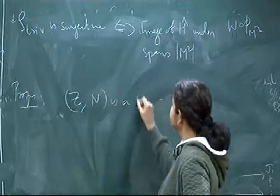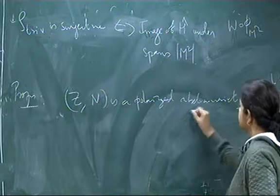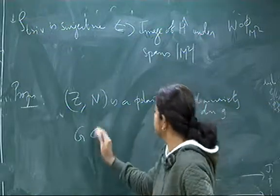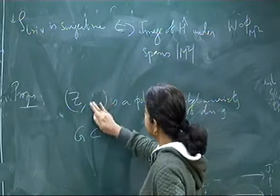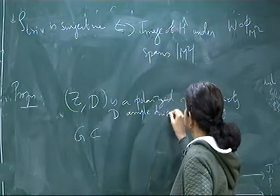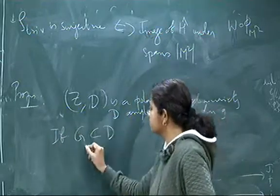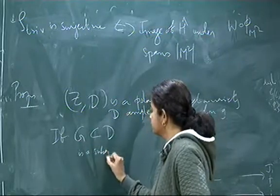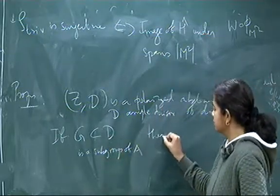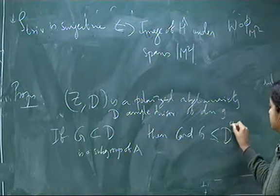It is a polarized, Abelian variety, so this is of dimension G and if G is a, yeah, so I will take N to be a divisor actually, D is an ample divisor, and so if you have G which is, so if G contains G, it is a subgroup, subgroup of A and moreover it is contained in D, then the cardinality of G can be at most D raise to G, the self intersection number,